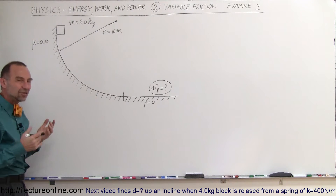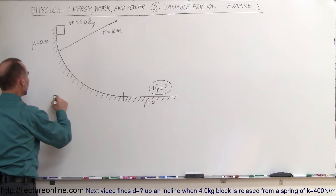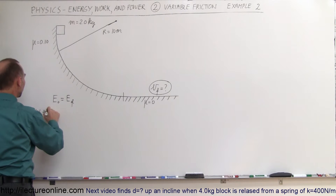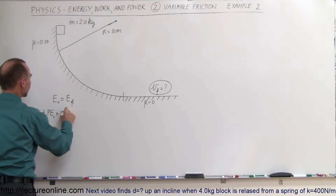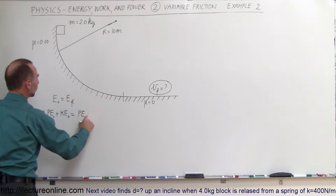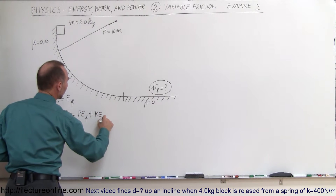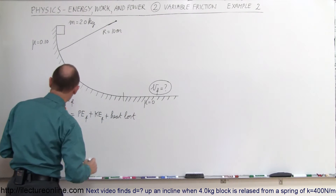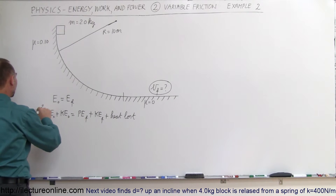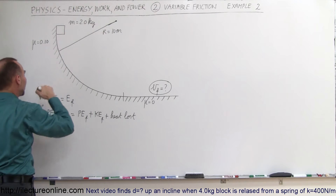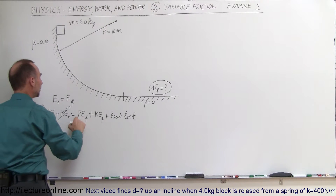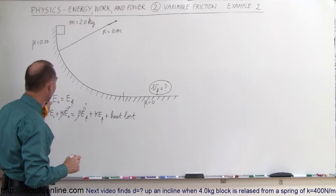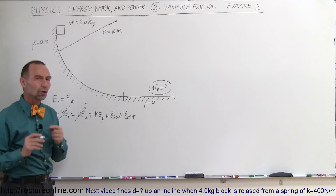We start with the general concept that energy initial equals energy final, which means that the work put into the system plus the initial potential energy plus the initial kinetic energy must equal the final potential energy plus the final kinetic energy plus the heat lost due to friction. Here, there's no work put into the system. The initial potential energy exists because of its height, there's no initial kinetic energy, and there's no final potential energy.